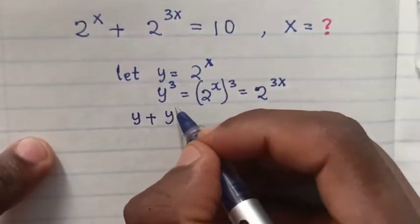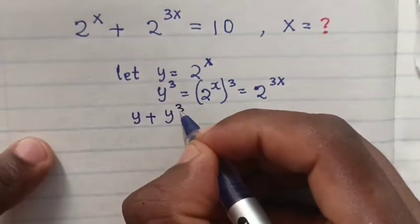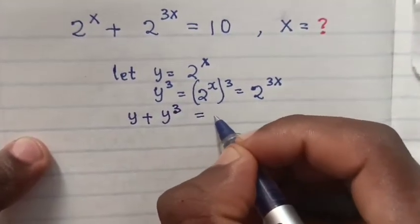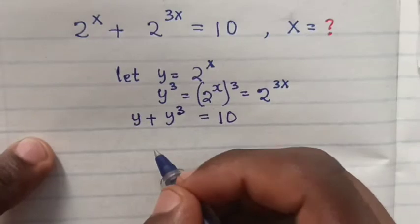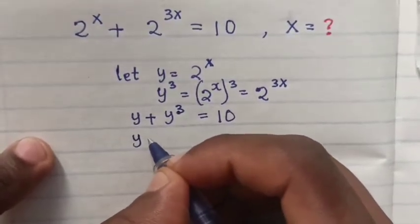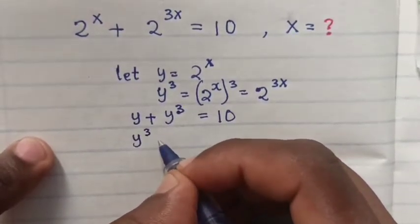So y and y^3 we substitute in our equation. So it will be y plus y^3 equals 10.